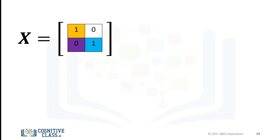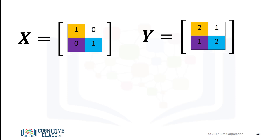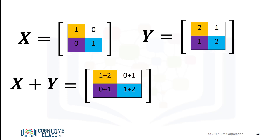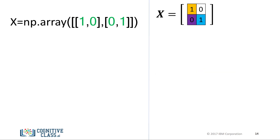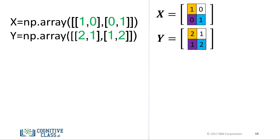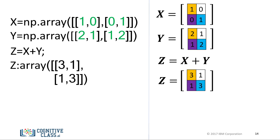We can also add arrays. We can add the matrices — this corresponds to adding the elements in the same position, i.e., adding elements contained in the same color boxes together. The result is a new matrix that is the same size as matrix X or Y, where each element is the sum of the corresponding elements in X and Y. To add two arrays in NumPy, we define the array X, then we define the second array Y, and we add them. The result is identical to matrix addition.